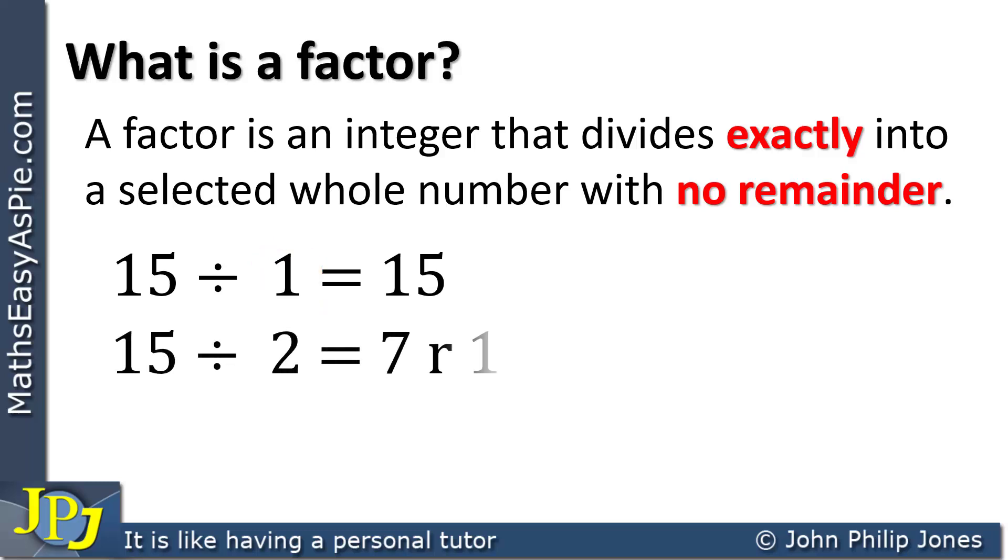I then divide by 2, and that goes 7 remainder 1, so 2 is not a factor of 15. We can carry on and say 15 divided by 3 goes exactly. Consequently, 3 is a factor.